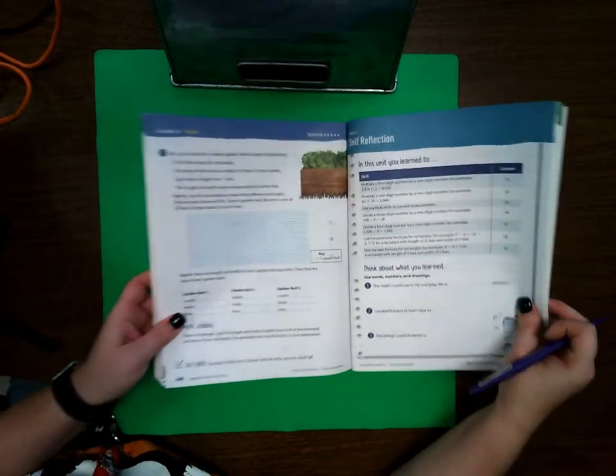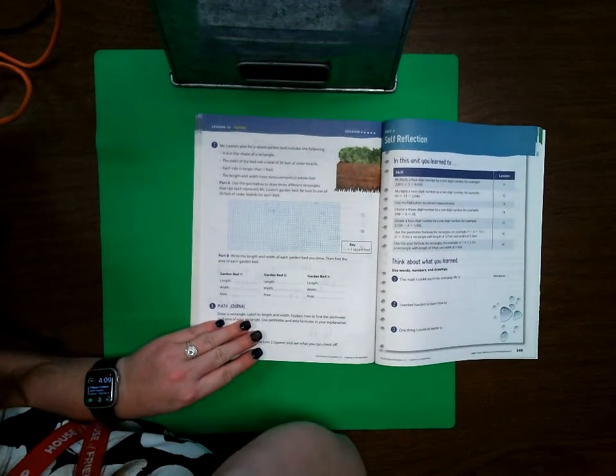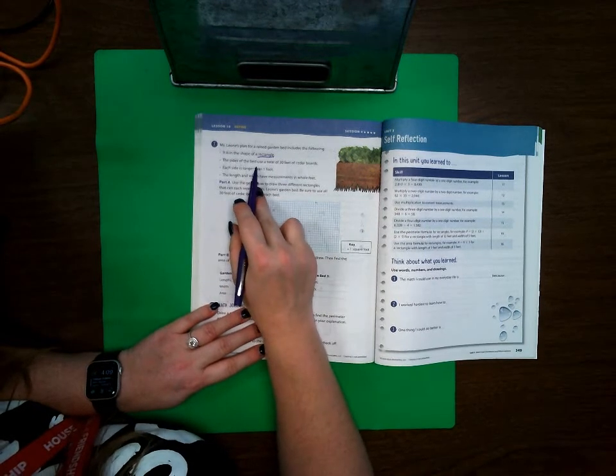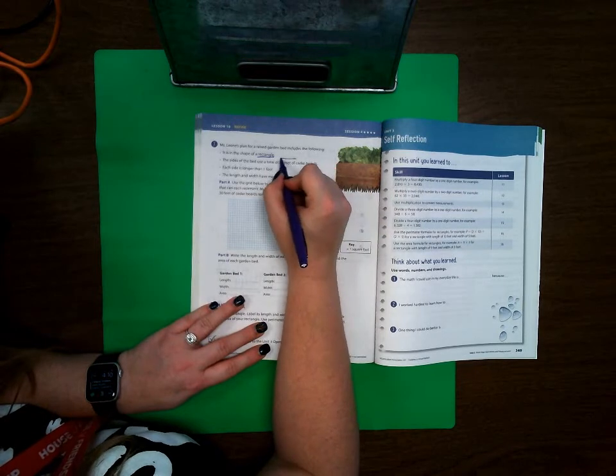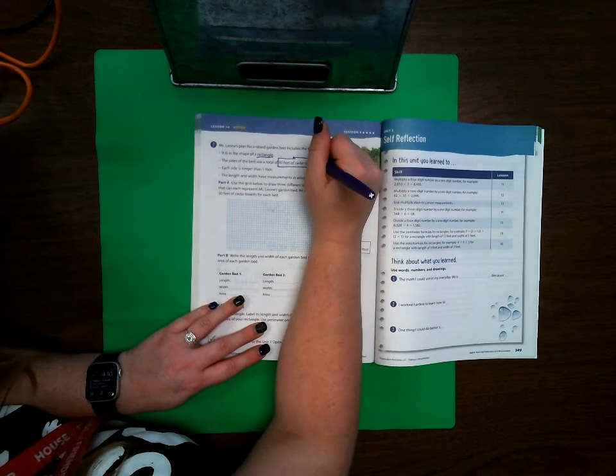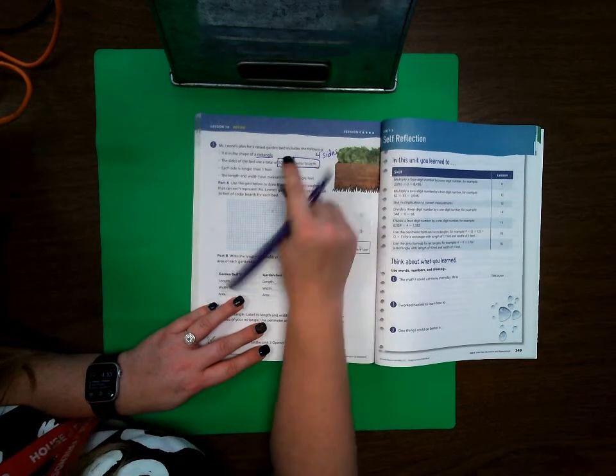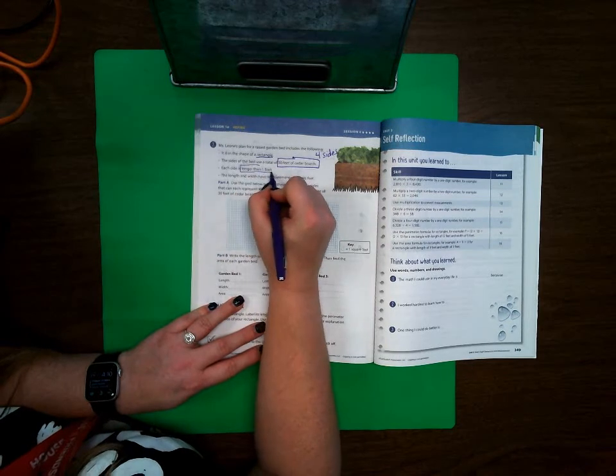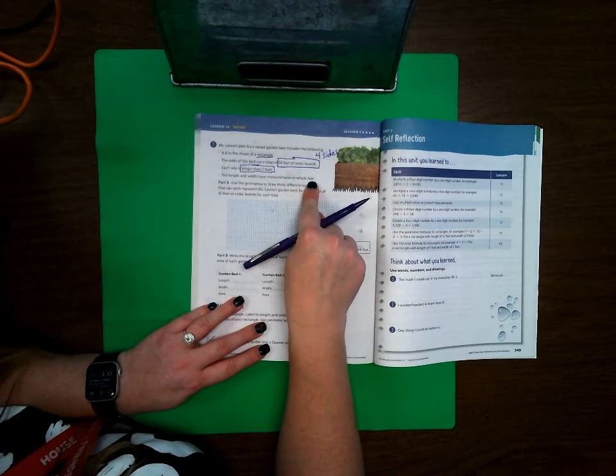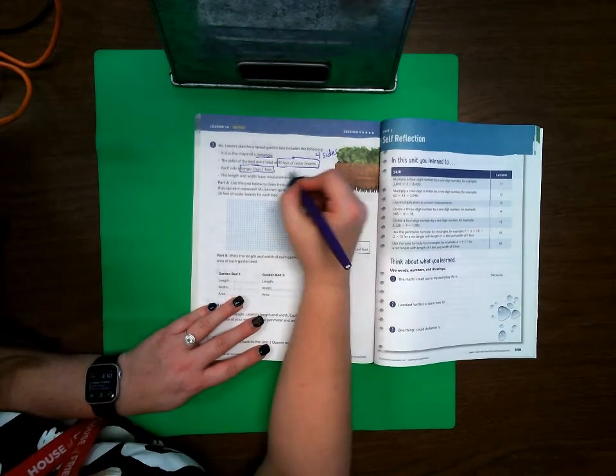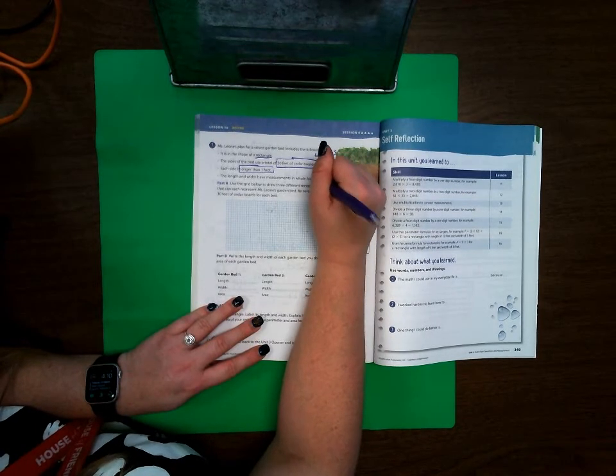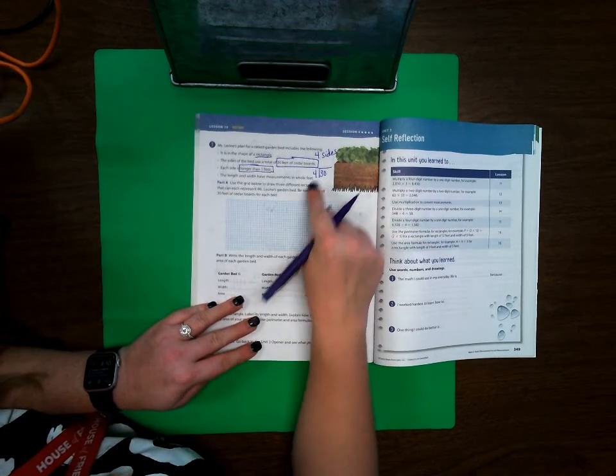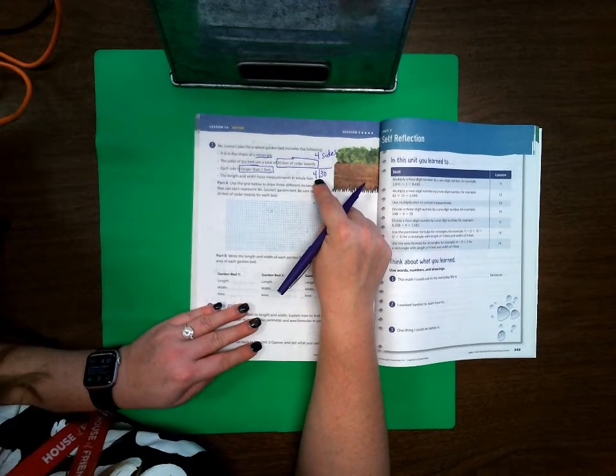348. Ms. Leon's plan for a raised garden bed includes the following. It is in the shape of a rectangle. The sides of the bed use a total of 30 feet of cedar boards. So that means that between the four sides we are only using 30 feet of cedar board. Each side is longer than one foot. The length and width have measurements in whole feet. So that means that we are going to take 30 and we are going to divide by 4. Well, 4 times 8 is 32. So we cannot divide this evenly. But we can come pretty close.